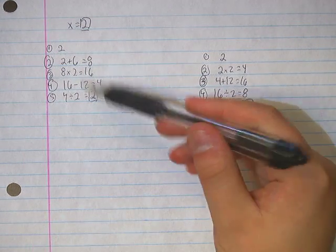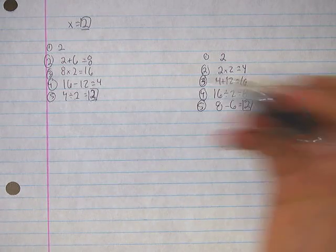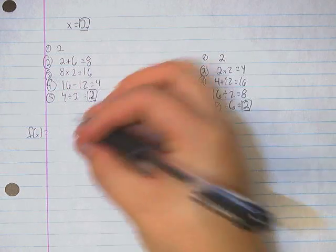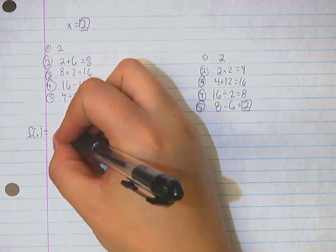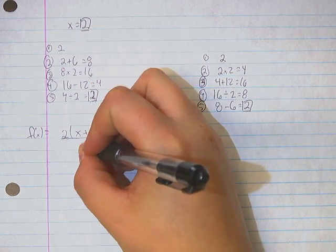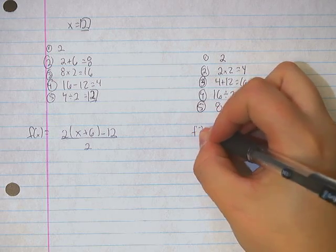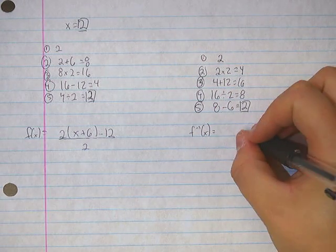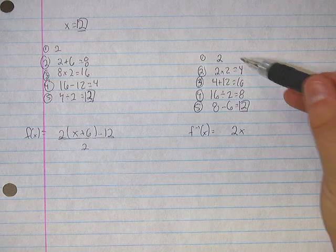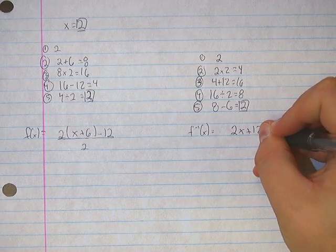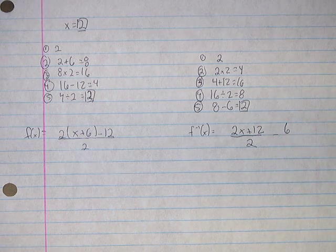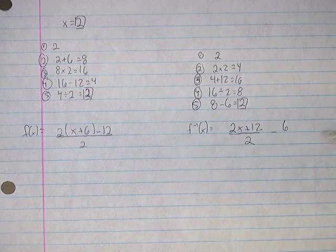Let's do this one with x's as opposed to 2. So we start out with our number. So this is f of x right here. We start out with our number. We add 6, multiply the whole thing by 2, subtract 12, and divide by 2. And then if we go in the opposite order, we start with our number, we multiply it by 2, we add 12, we divide it by 2, and then subtract 6.